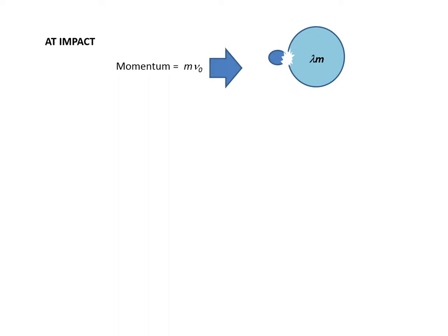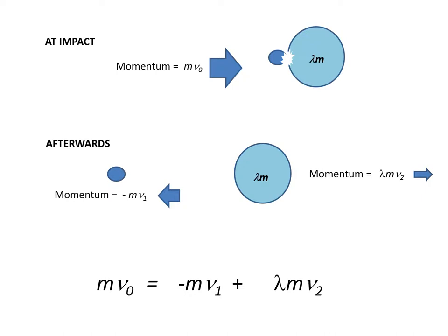At the instant of impact, the momentum delivered by impactor is mV naught. Right afterwards, the momentum of the rebounding impactor is minus mV1 whereas that of the target is lambda mV2. So you make use of this information to write down the equations of equal momentum as shown at the bottom of the slide.